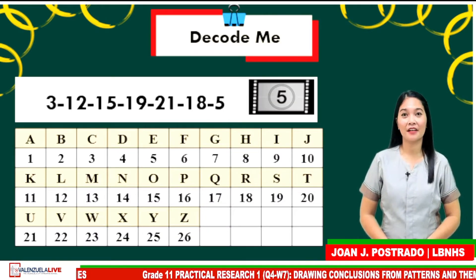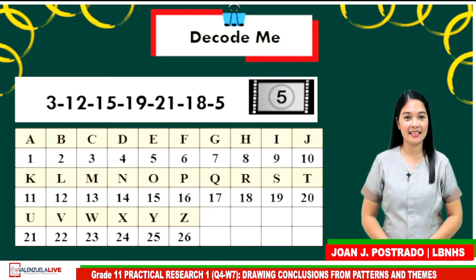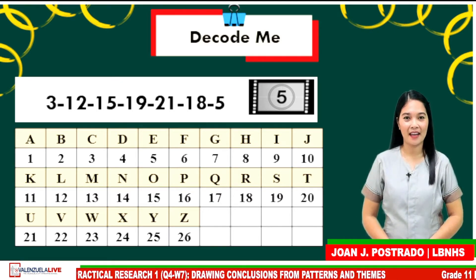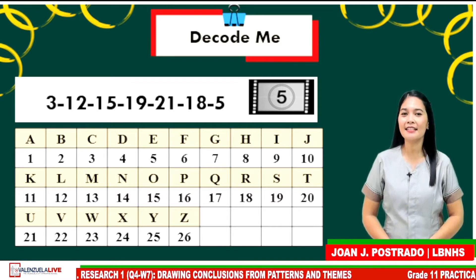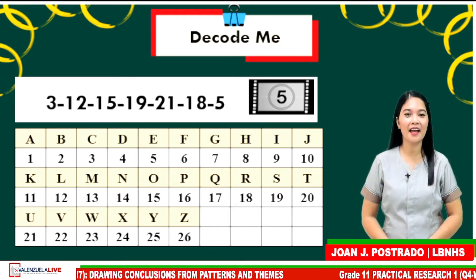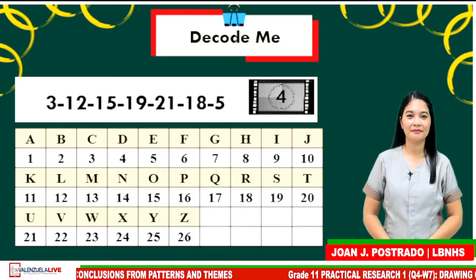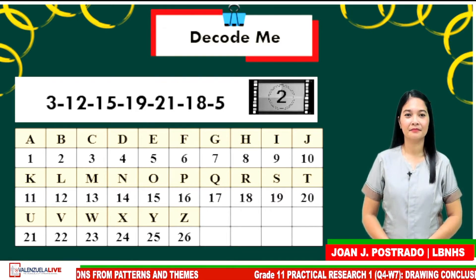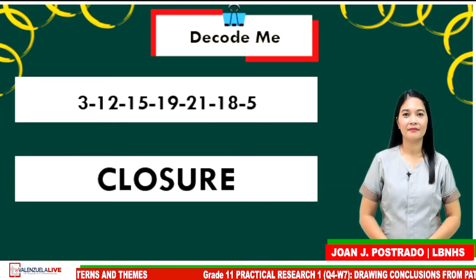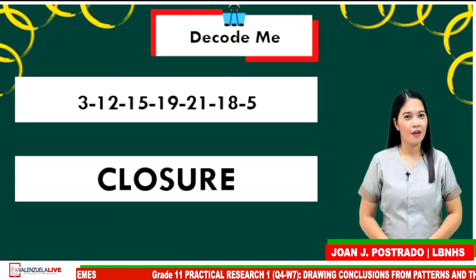Next numbers are 3, 12, 15, 19, 21, 18, 5. Clue: this is like completing the finished part. If your answer is closure, very good!